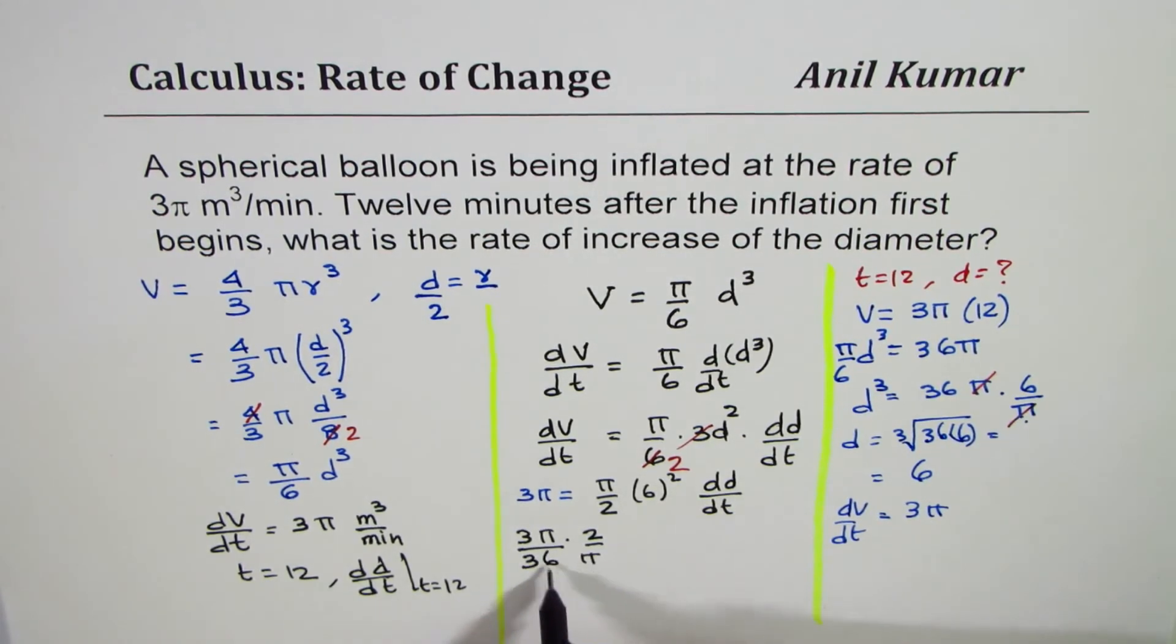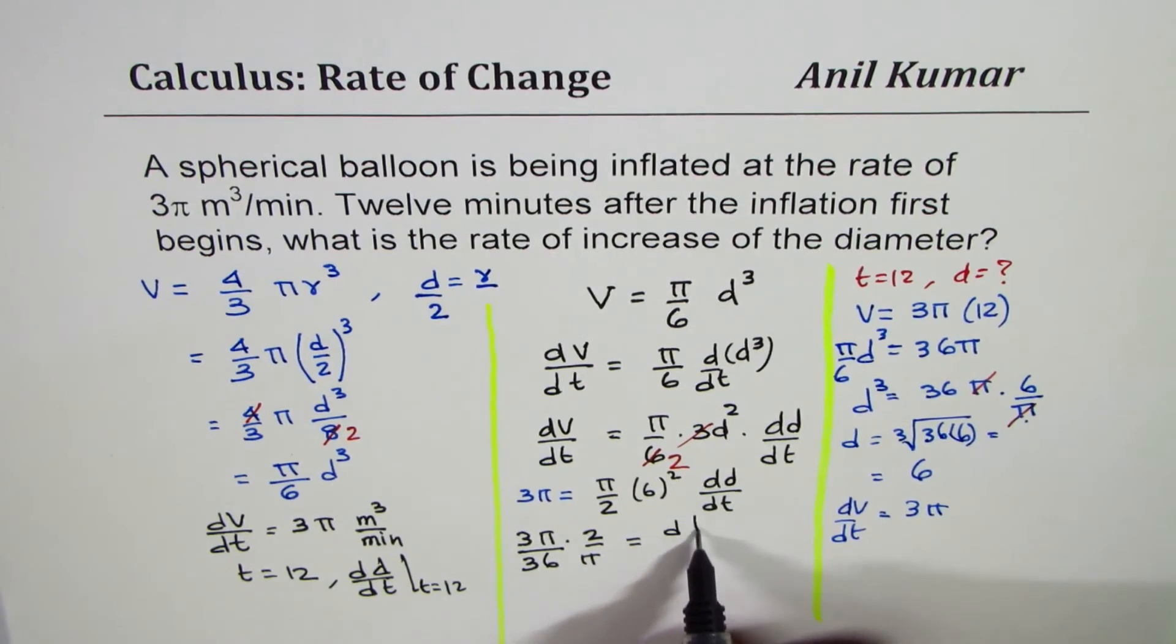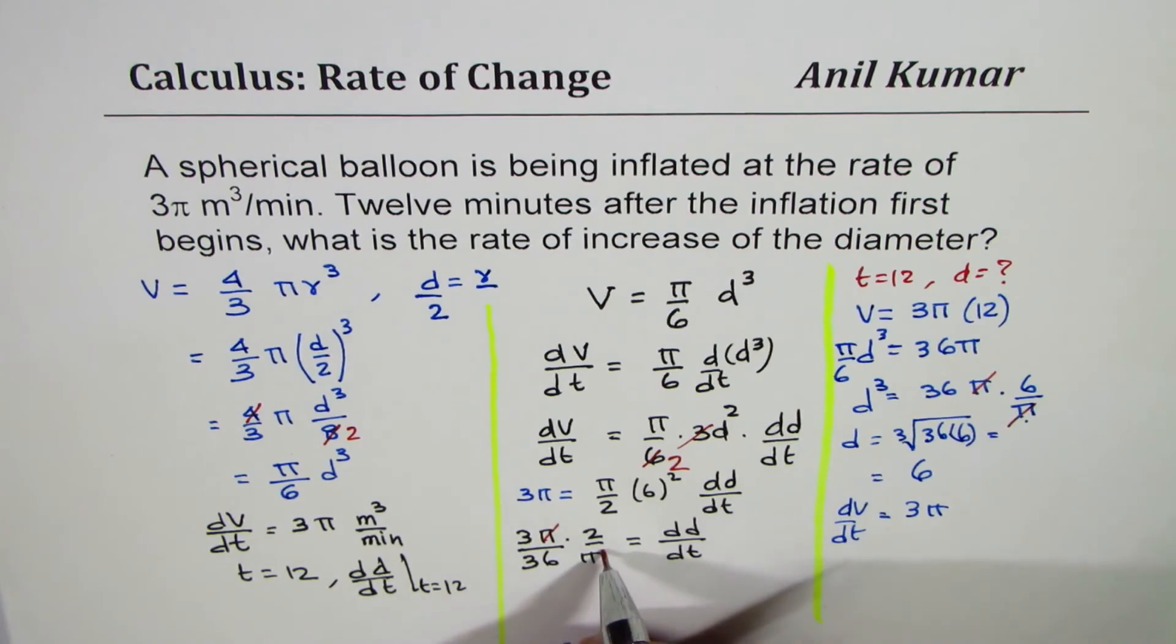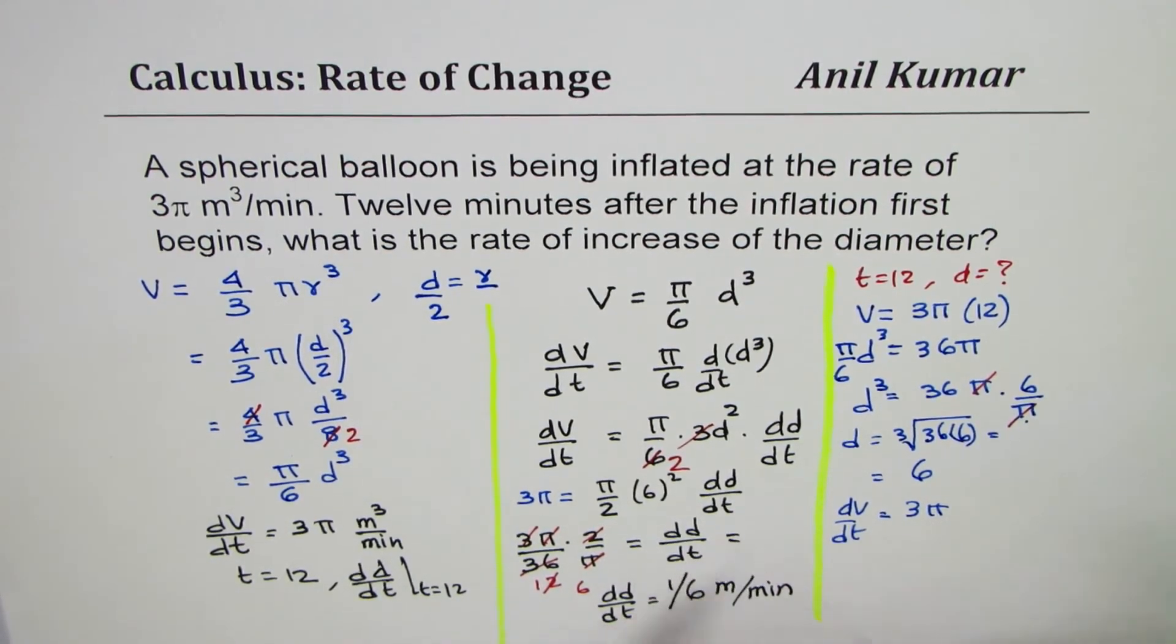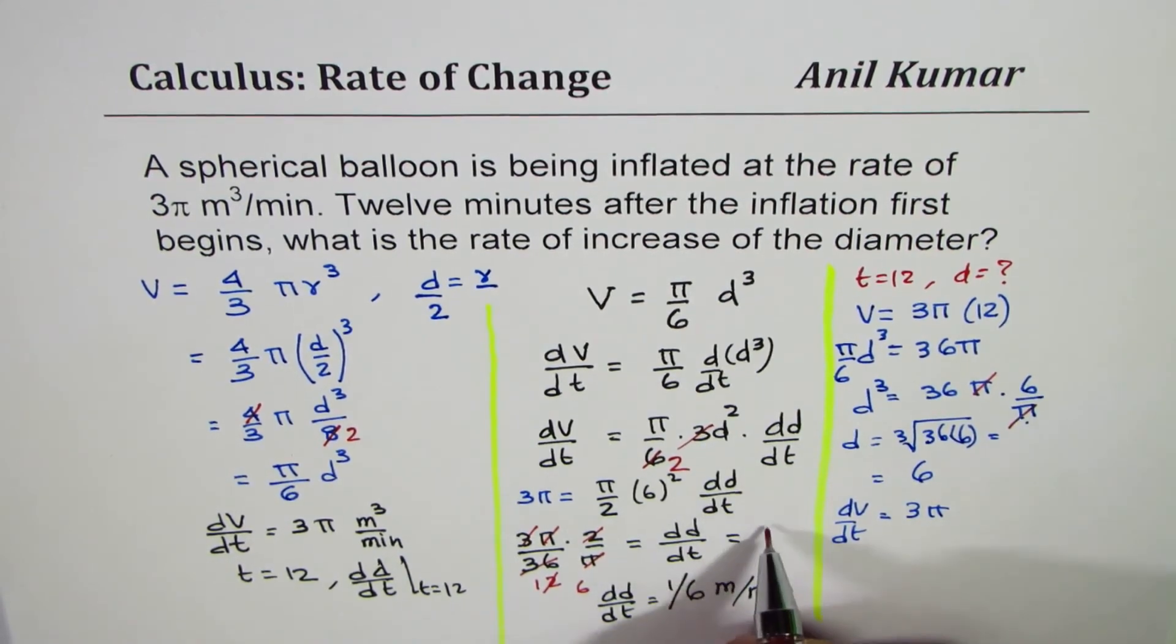Let's write 36 equals dd/dt. π and π cancel. 3 goes 12 times and 2 goes 6 times. I'm sorry, 1 over 6 - it's in the denominator. So dd/dt equals 1/6 meters per minute.